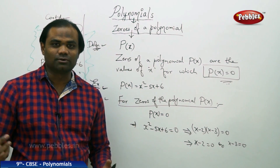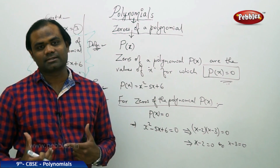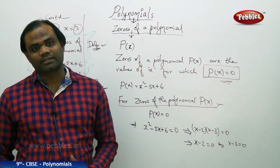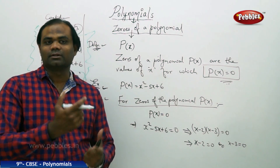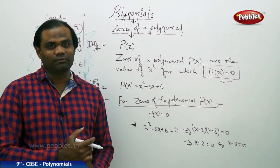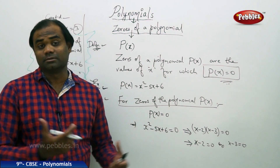To summarize: equate p of x to zero, find x, and that x is the zero of the given polynomial p of x. It's simple.